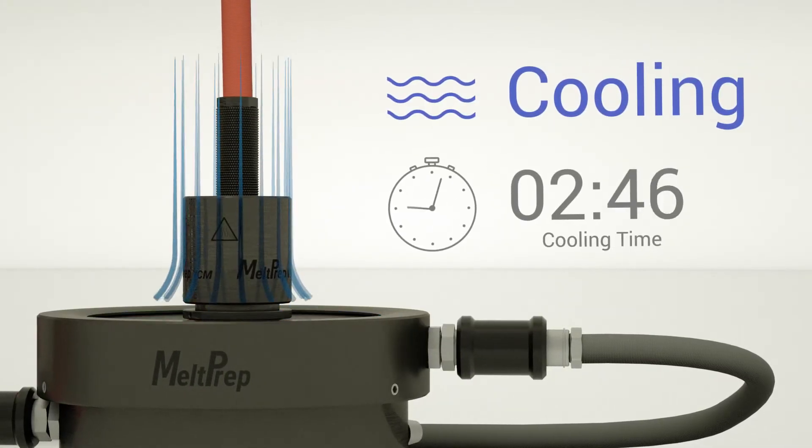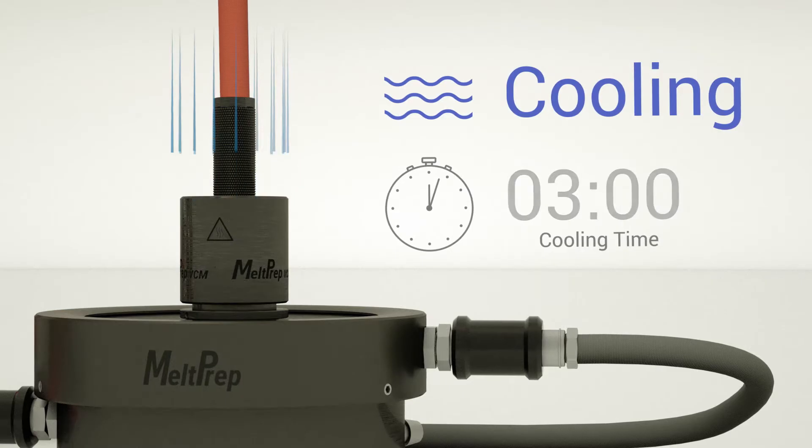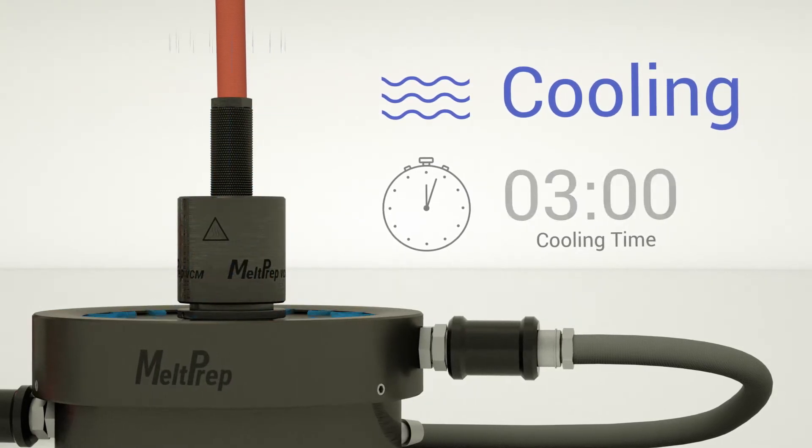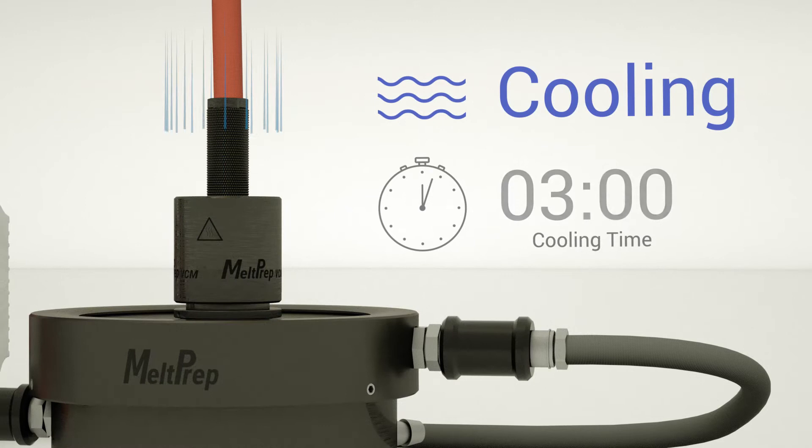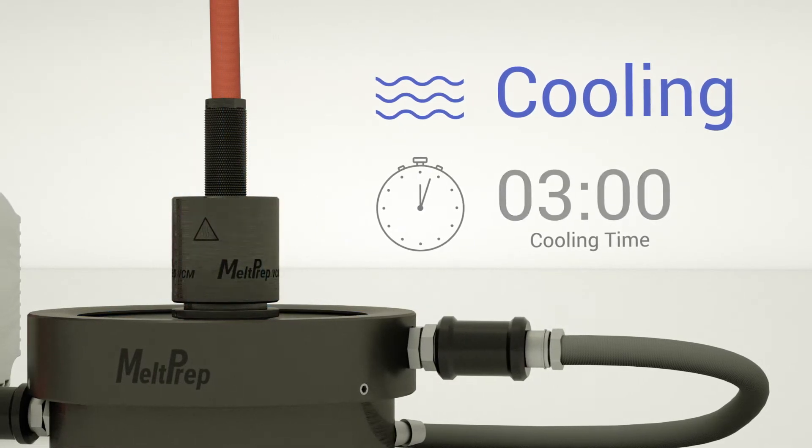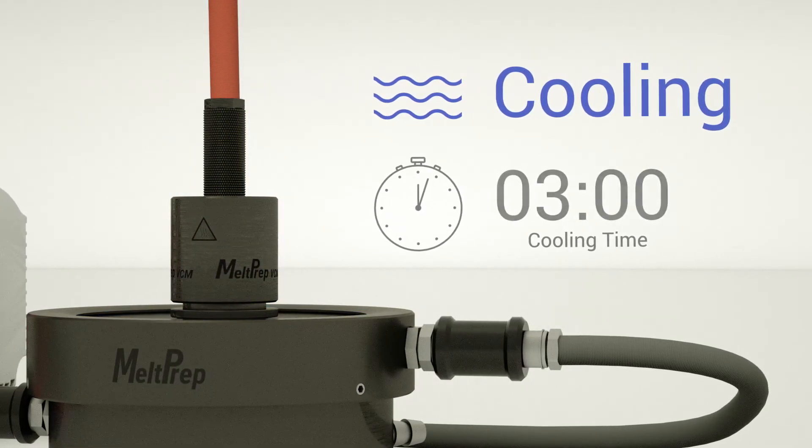After the sample has melted, manually transfer the hot VCM tool to the cooling unit. The compression force initiated by the vacuum acts continually on the sample throughout the cooling process to avoid shrinking voids.